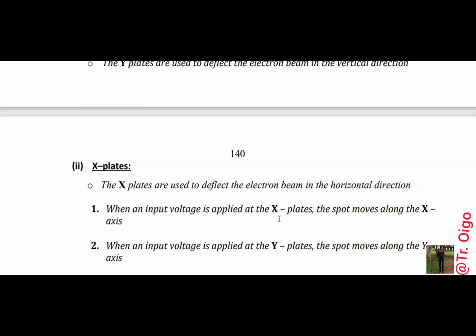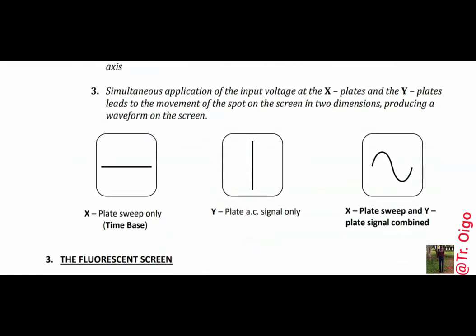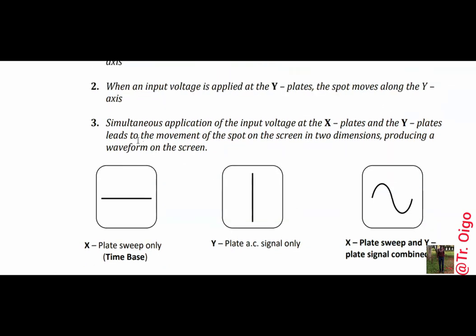When an input voltage is applied at the x-plate, the spot moves along the x-axis. Similarly, when the voltage is applied on the y-plate, the spot moves up and down on the y-axis. A simultaneous application of the input voltage at the x- and y-plates leads to movement of the spot on the screen in two dimensions, producing a wave on the screen. If only the x-plate is on, it swipes horizontally; if only the y-plate, it swipes vertically; but combined simultaneously, we get a sinusoidal wave.